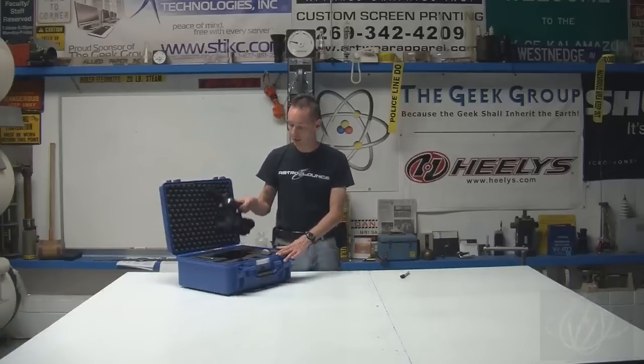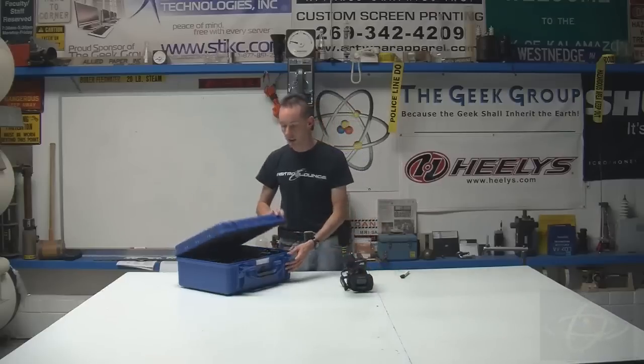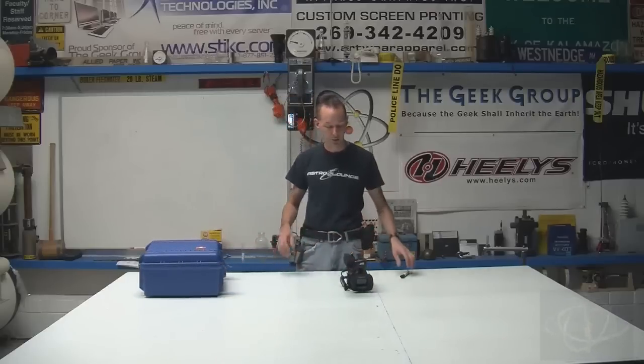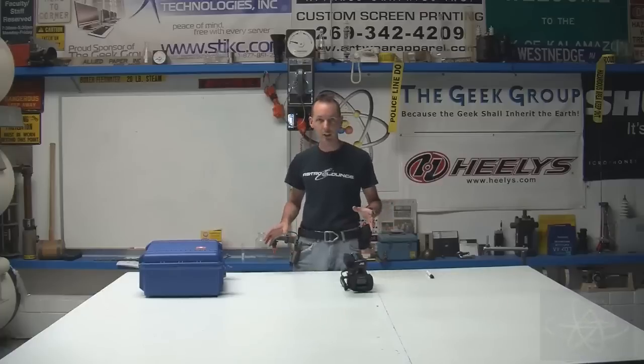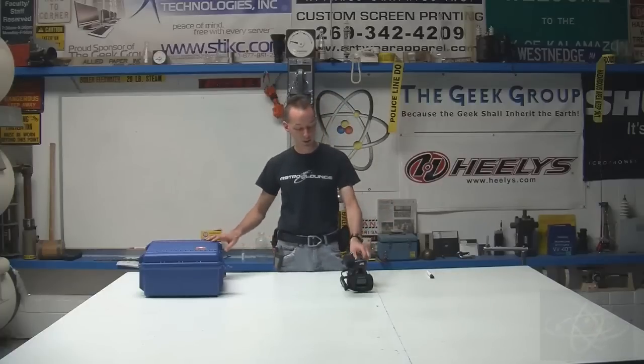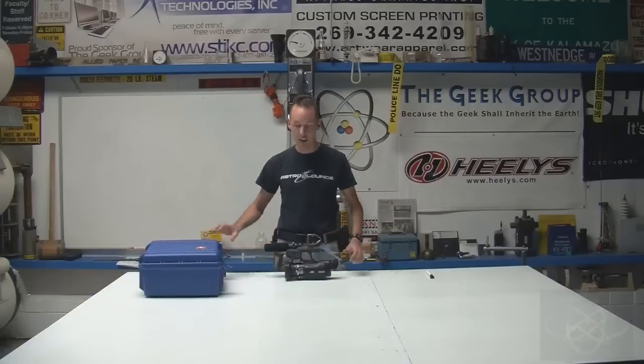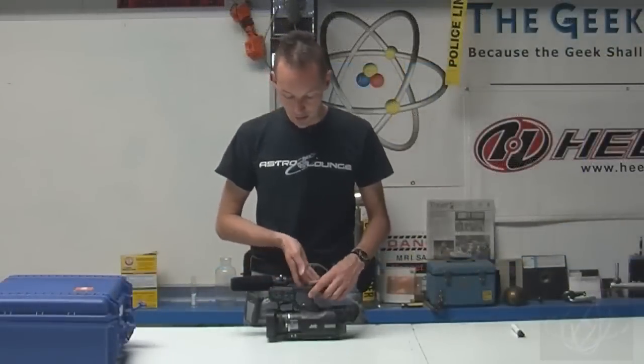So I'll take the camera out of the case and I'll cover the basics of the camera. Now the camera comes with the remote and the batteries and all the other stuff. It comes disassembled, but it'll take you 30 seconds to put it together. It's not really that big a deal. So this is the HM100U camera. Let's take a look at the camera.